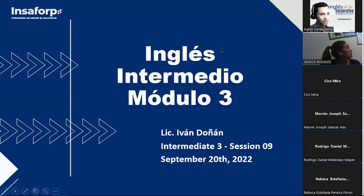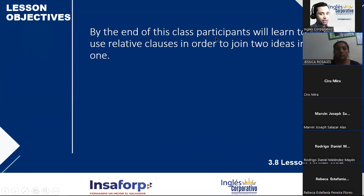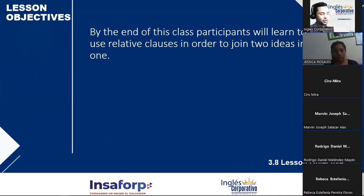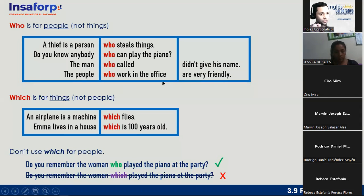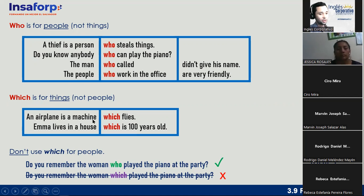We're going to do several things today. By the end of this class, participants will learn to use relative pronouns in order to join two ideas into one. We have one more exercise — first a short review, then the final exercise. Quick review: 'who' is for people, not for things. A thief is a person who steals things. Do you know anybody who can play the piano? An airplane is a machine which flies.